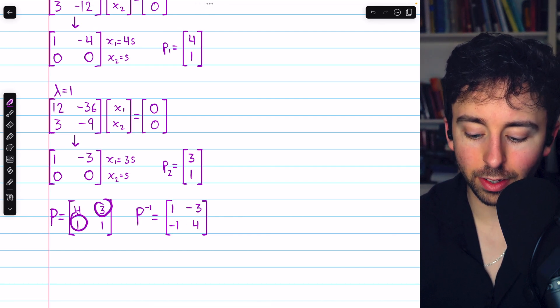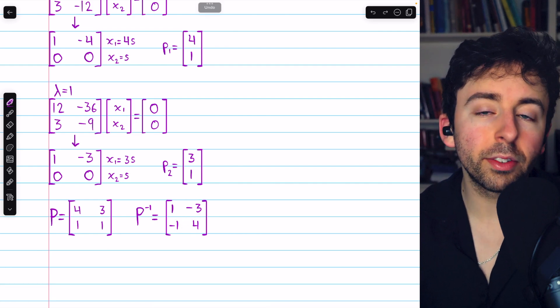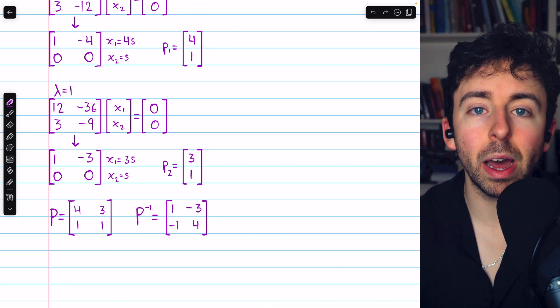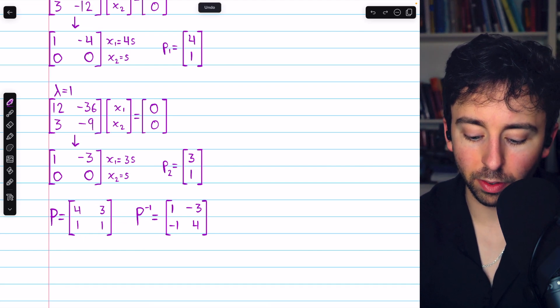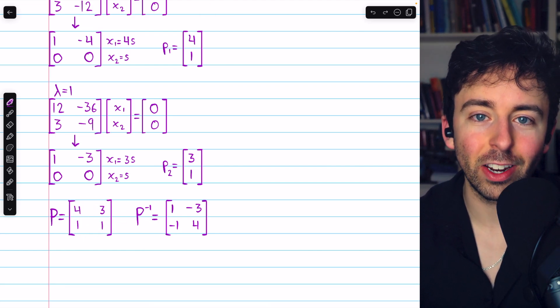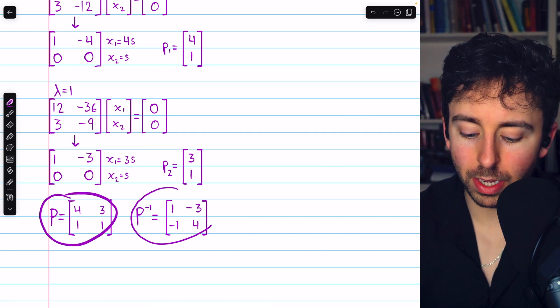Just reverse those entries, so we have 1 there and 4 there. Negate those entries, so -3 and -1. And then we also need to multiply the whole thing by 1 divided by the determinant, but the determinant of this matrix is just 4 - 3, so 1. So that doesn't change anything. So there's P, there's P inverse.